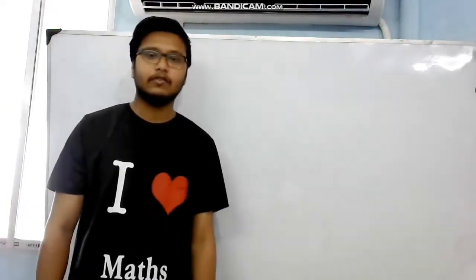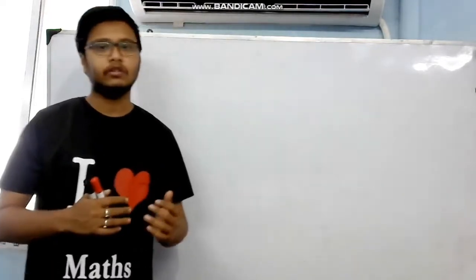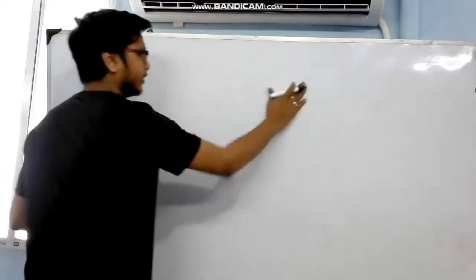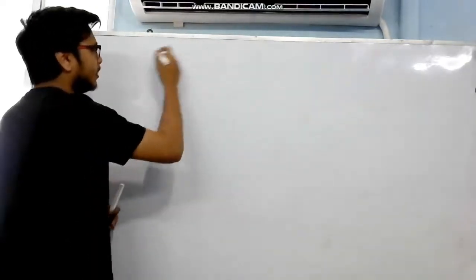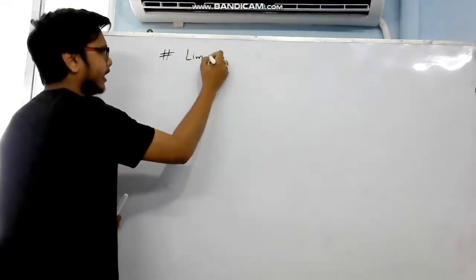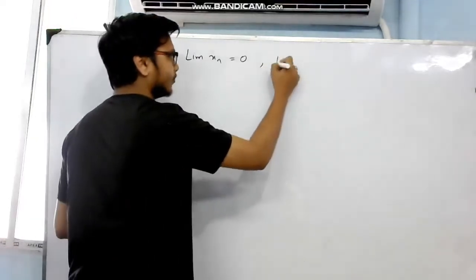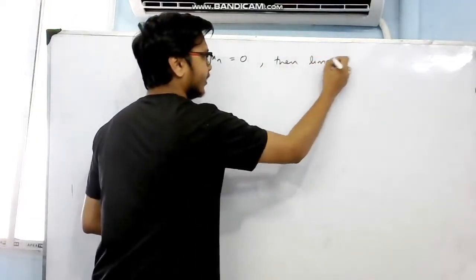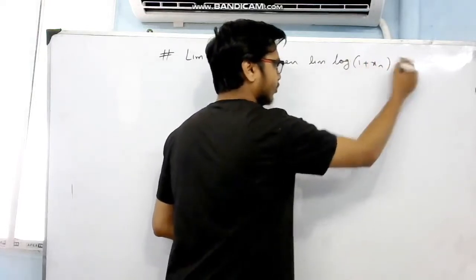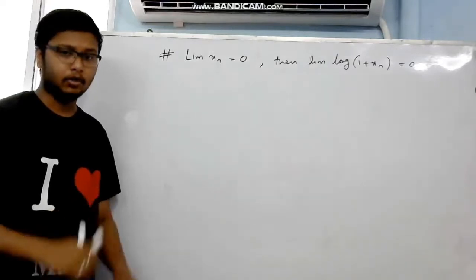In this video we are going to discuss finding limits using the concept of sequences. Suppose we have that limit xn equals 0 — this is given — and we want to prove that limit of log(1 + xn) is also equal to 0, with the help of the concepts of sequences.